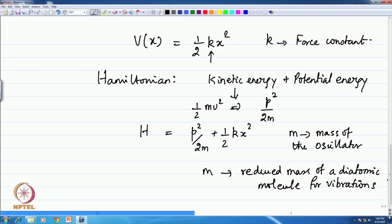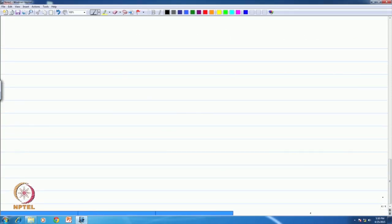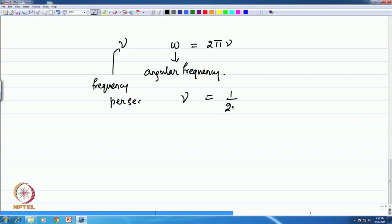Also, please remember the harmonic oscillator is associated with a frequency nu or an angular frequency omega which is 2 pi times nu. This is the angular frequency in radians per second. This is the frequency linear. The frequency of a harmonic oscillator in a classical form is something that you all know.